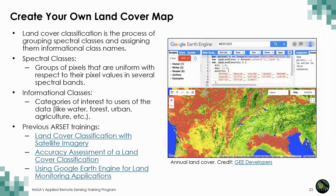If you have the capability, creating your own land cover map is ideal. There are many different land cover maps available with different vegetation classification schemes, and you are really the expert of your region. Accuracy is often increased when you have your own data of the region. We've also just completed a training on running land cover classification in Google Earth Engine, and we have previous RSET trainings about land cover classification, so do check those out for more information.